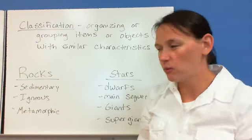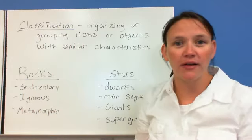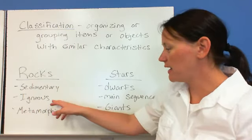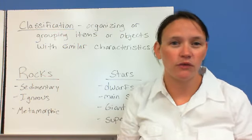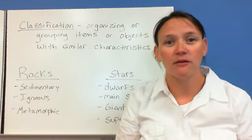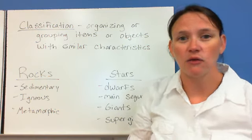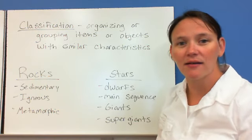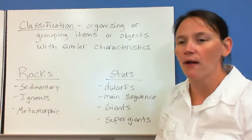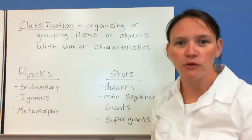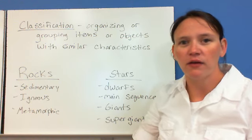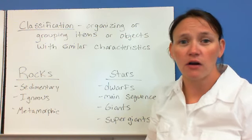Like with geology, we can look at rocks. Well, there's different kinds of rocks. We have sedimentary, igneous, and metamorphic. Or when we get into astronomy and we start talking about stars, there are different types of stars. And those are placed into groups based on their similar characteristics as well. So you have dwarf stars, main sequence stars, giants, and supergiants.